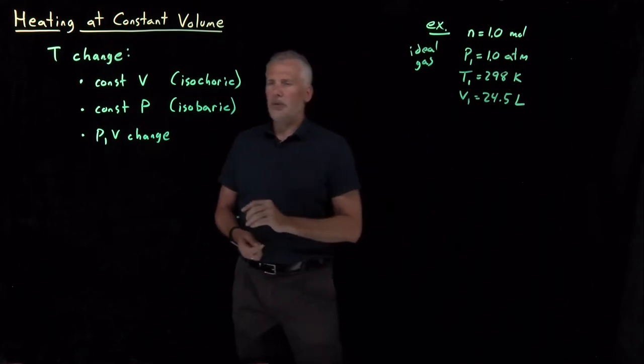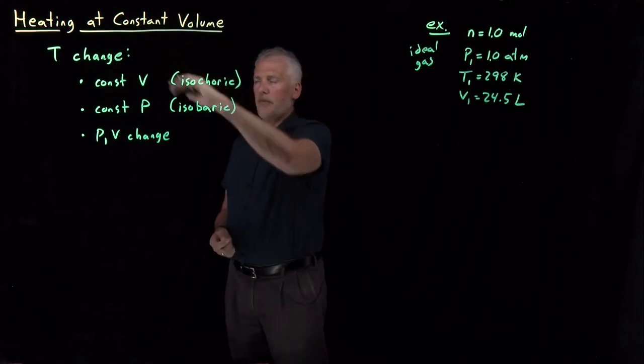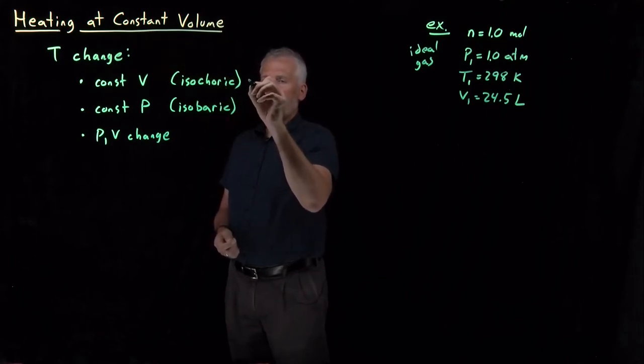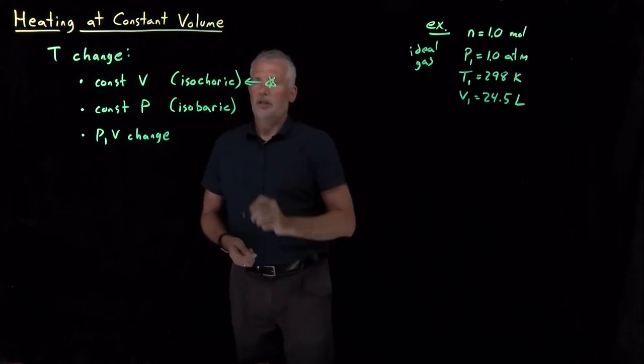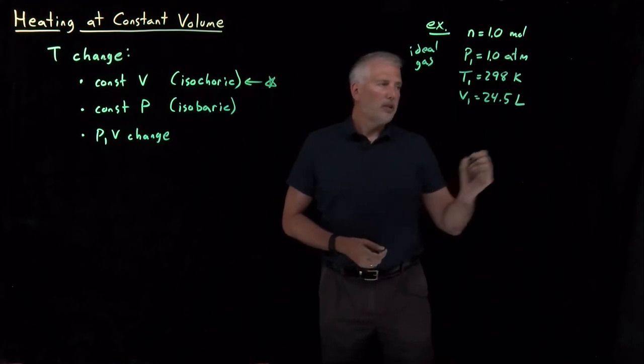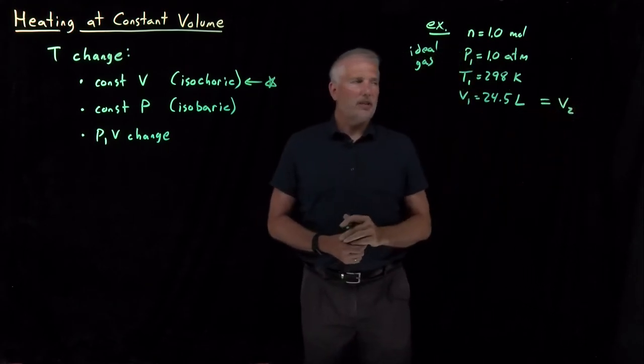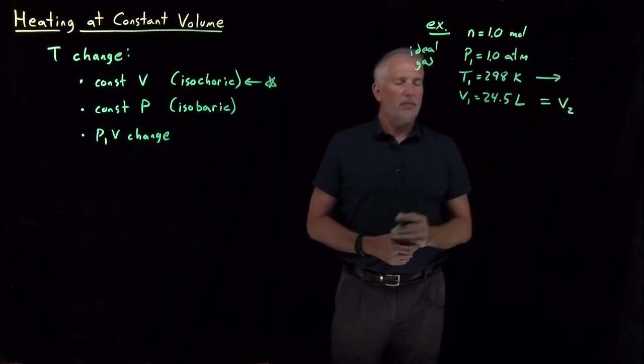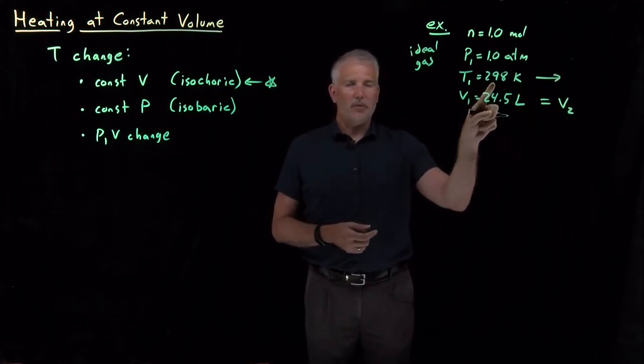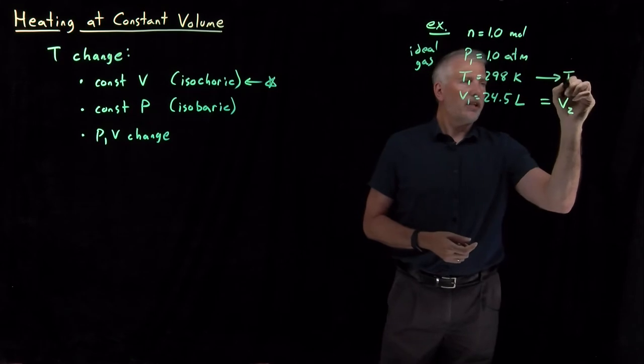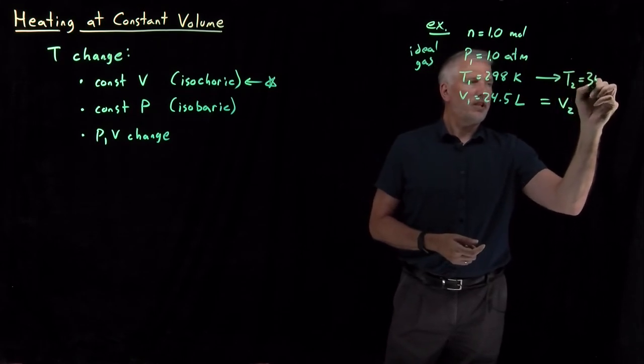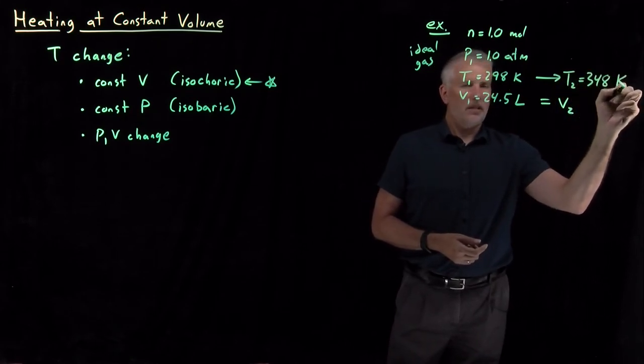And now let's stick with a constant volume temperature change. So we're going to do an isochoric process. We're going to not allow the volume to change. We're intentionally going to change the temperature. So I've got a box of gas that I'm heating from 298 Kelvin, and let's heat it up by 50 degrees. So let's heat it up to 348 Kelvin.